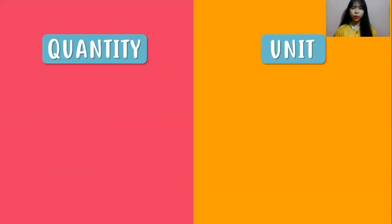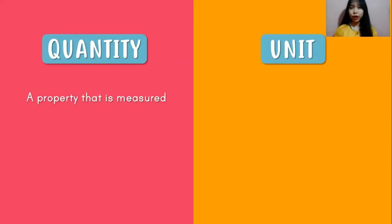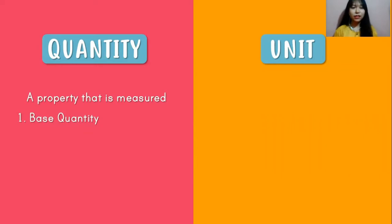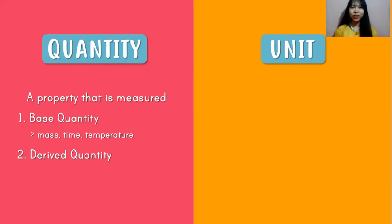What is quantity and what is unit? Quantity is a property that is being measured. There are two kinds of quantity. The first one is base quantity, or the fundamental quantity — examples are mass, time, and temperature. The second type is derived quantity; just like its name, it is derived from the base quantity. Examples include pressure, volume, and speed. We're going to learn about derived quantity after this.